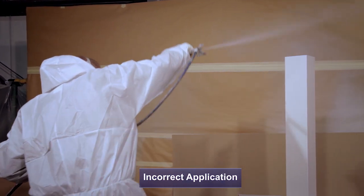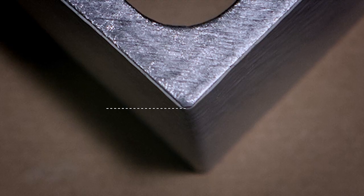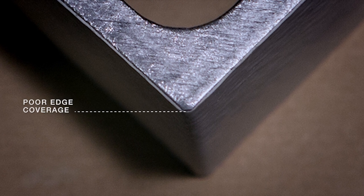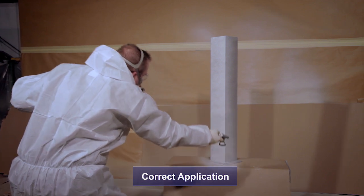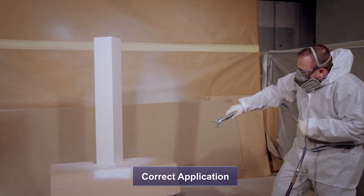Corrosion will take place more rapidly on a corner than on a flat surface. In order to achieve good edge coverage, the applicator must spray directly at the corner and then coat each face with the spray gun perpendicular to the surface.